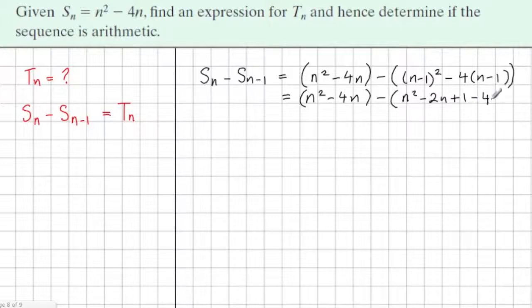Minus 4 by n is minus 4n, and minus 4 by minus 1 is plus 4. You can just neaten this up.